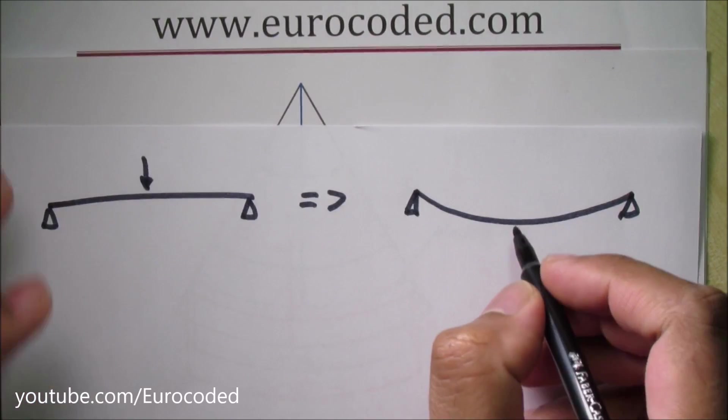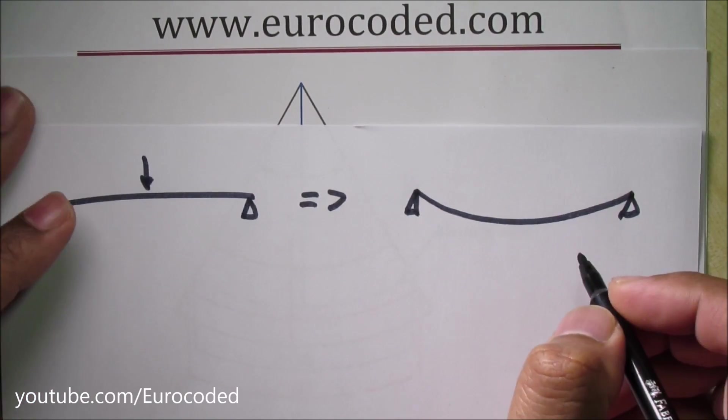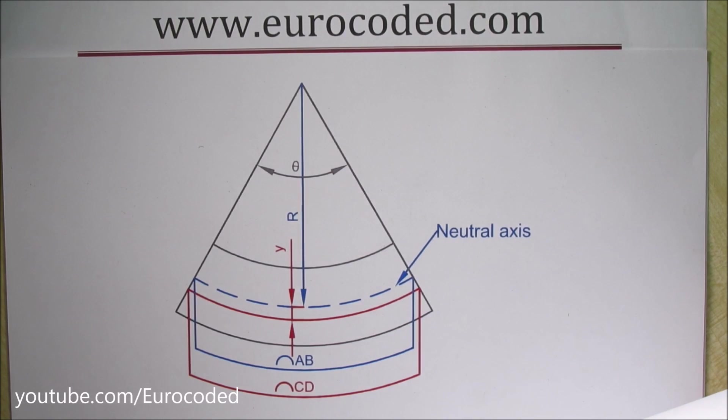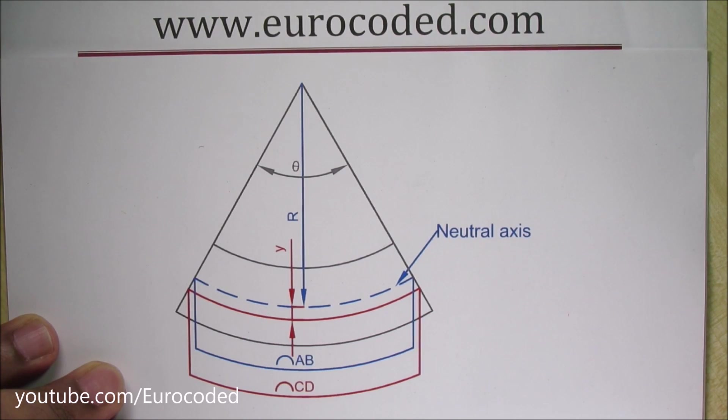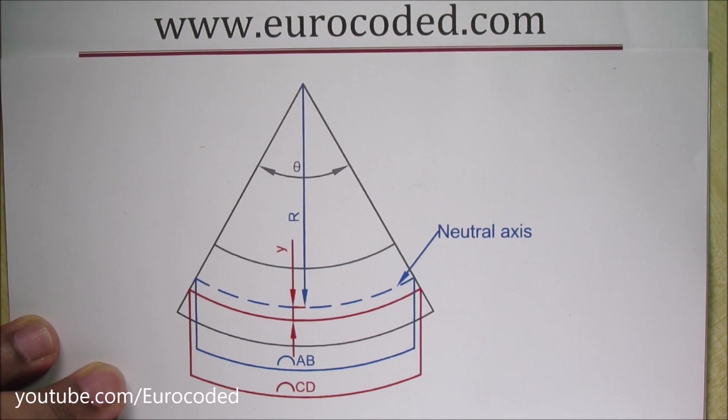We're going to look at a very small portion of this deformed beam. That's what I've drawn here. As you can see, this little portion has a circular shape. However, in reality beams don't typically bend or deform into circular shapes.